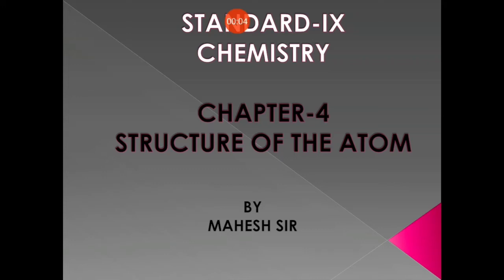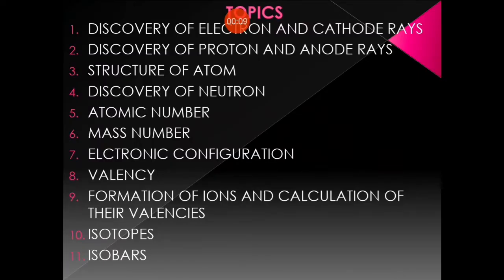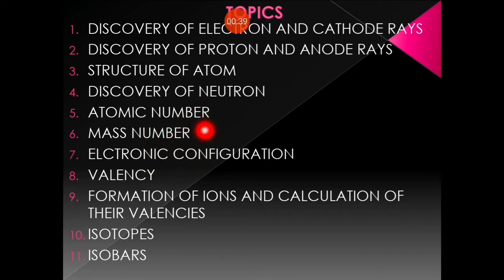Good morning everybody. We are in Chapter 4: Structure of the Atom. As we have discussed in previous video presentations — the discovery of electrons by Sir J.J. Thomson, discovery of the proton by Goldstein, structure of the atom, Bohr's model, and discovery of the neutron — today I would like to discuss atomic number, mass number, valencies, electronic configurations, isotopes, and isobars.